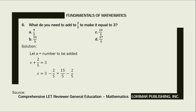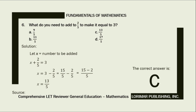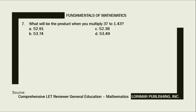Noticeably, our denominators are equal. All we have to do is copy our denominator and subtract the numerators: 15 minus 2, all over 5. 15 minus 2 equals 13, therefore x equals 13 fifths. The correct answer is letter C, 13 fifths. Problem number 7.